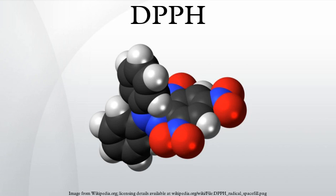Because DPPH is an efficient radical trap, it is also a strong inhibitor of radical-mediated polymerization. As a stable and well-characterized solid radical source, DPPH is the traditional and perhaps the most popular standard of the position and intensity of electron paramagnetic resonance signals.